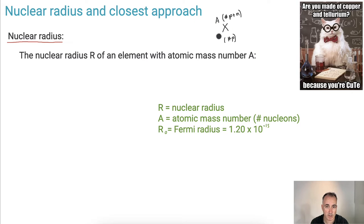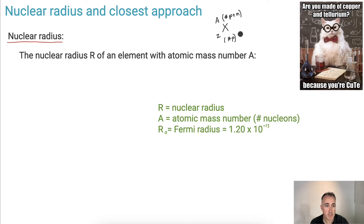For example, if Z is 1, you know it's the first element — hydrogen. If Z is 2, you know it's helium, and so on. Given this, we can actually find the nuclear radius using an equation in your formula book — you don't have to memorize it.